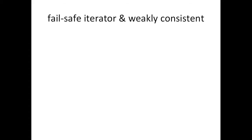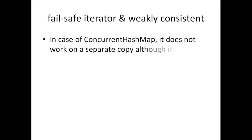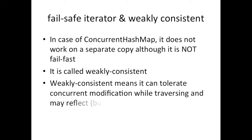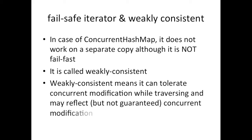Fail-safe iterators and weakly consistent: sometimes you might be confused between the weakly consistent and fail-safe iterator terms. In the case of ConcurrentHashMap, it does not work on a separate copy. Although it's not fail-fast, it is called weakly consistent. Weakly consistent means it can tolerate concurrent modification while traversing and may reflect, but is not guaranteed to reflect, concurrent modifications.